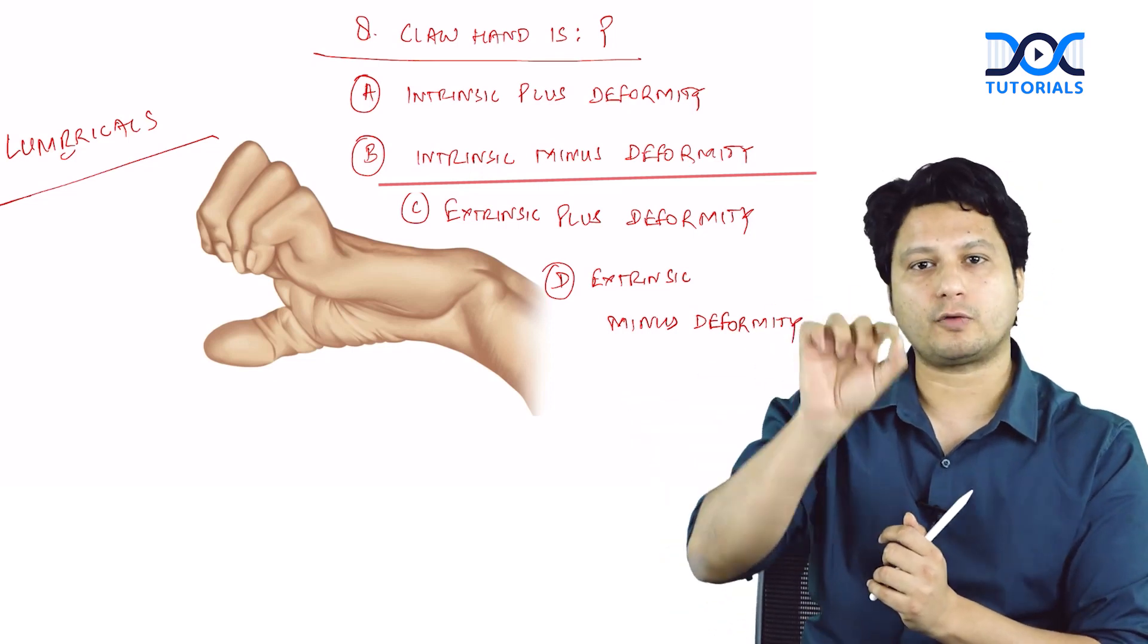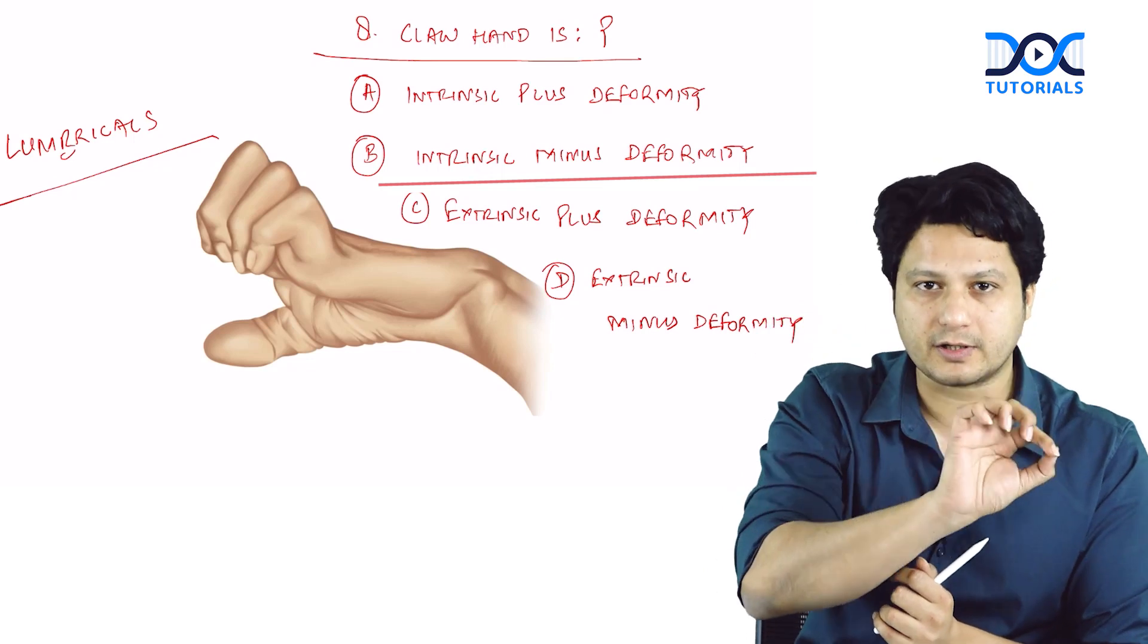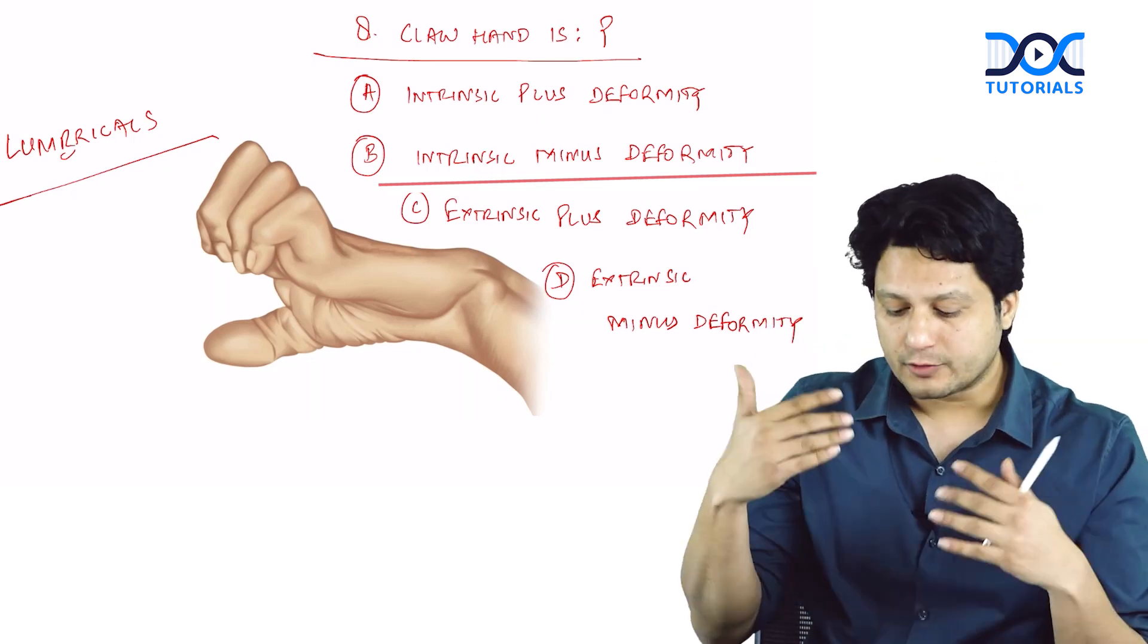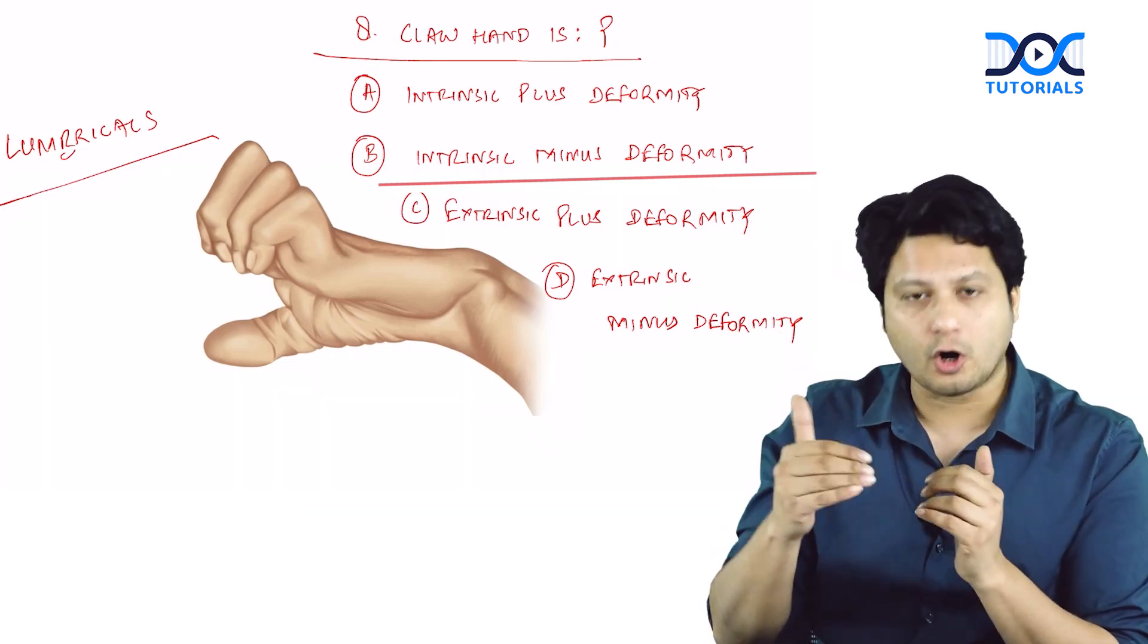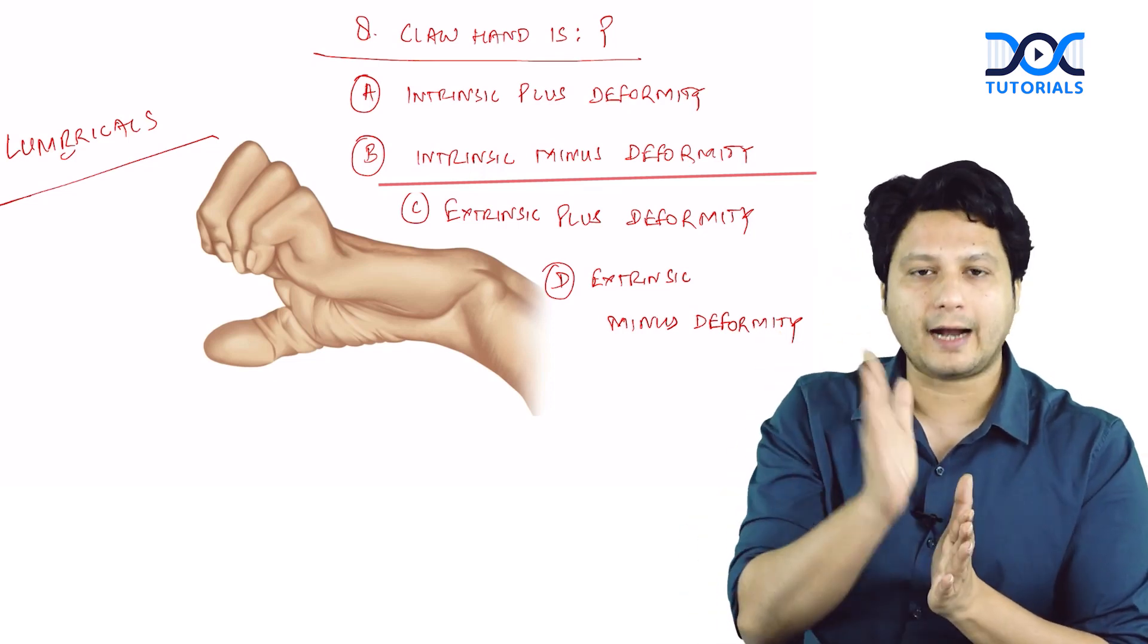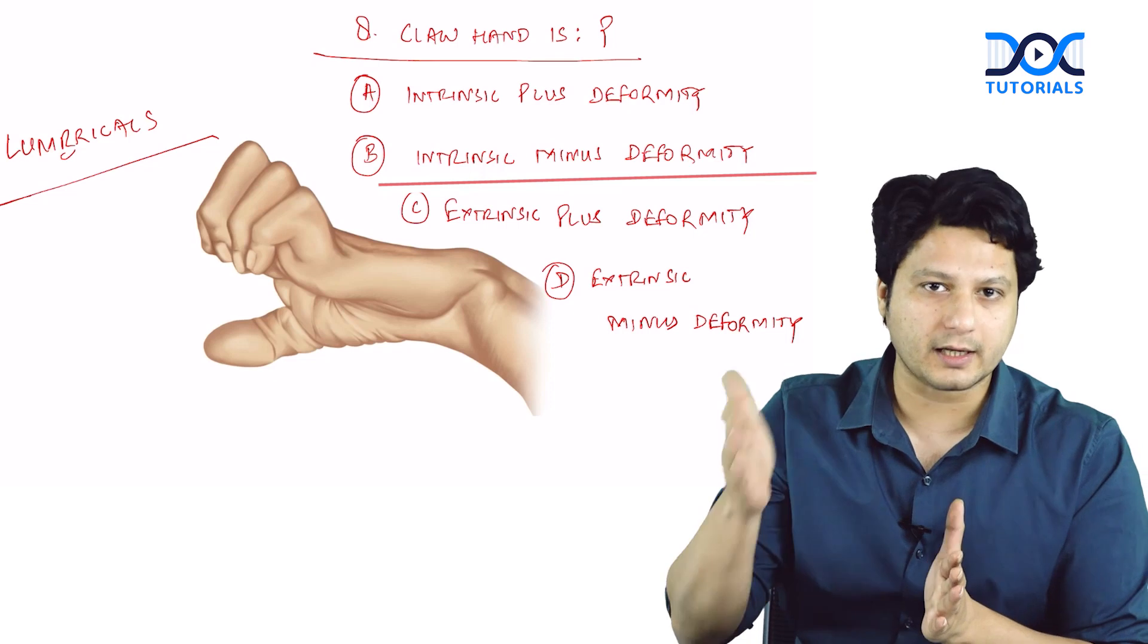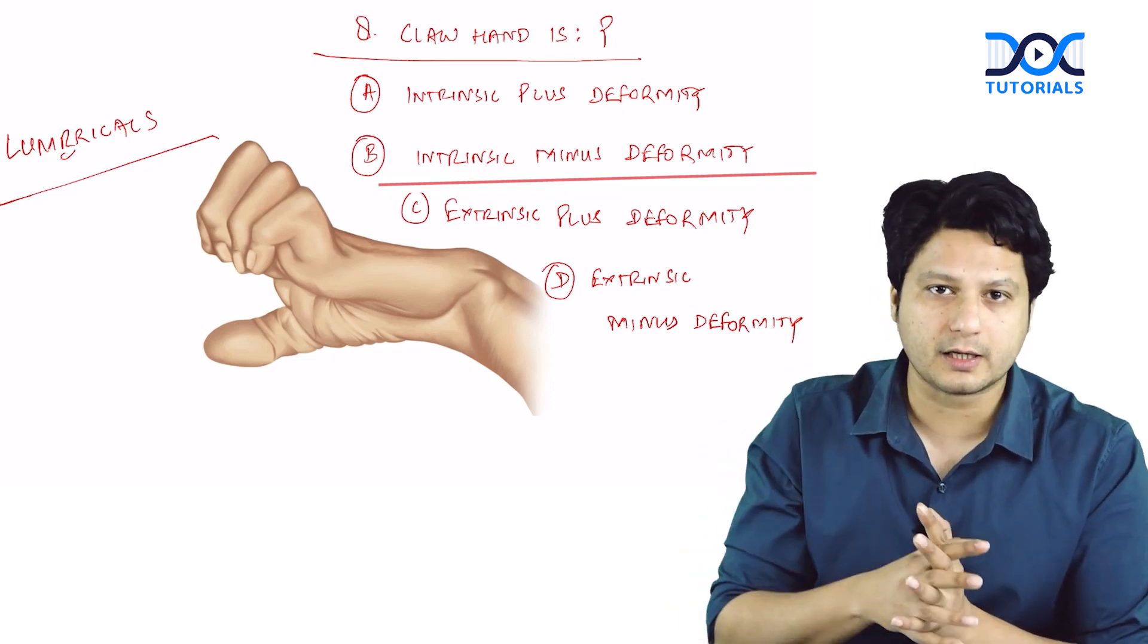This deformity is because of the lack of one set of intrinsic muscles, the lumbricals. In the future, there's a possibility that an examiner can give you these confusing options and ask what claw hand deformity is. The answer to that question is intrinsic minus deformity.